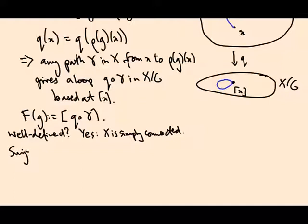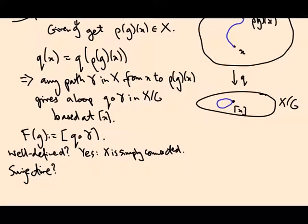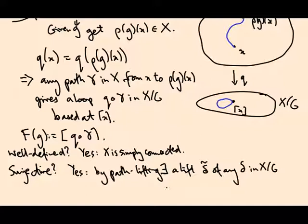Is it surjective? In other words, if I have a loop in the quotient space, can I find a path upstairs that projects down to it? Well yes, I can by path lifting. And then the point is at the end of that path.